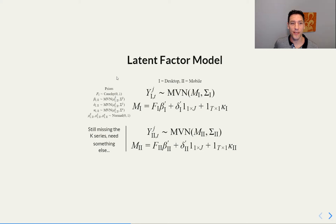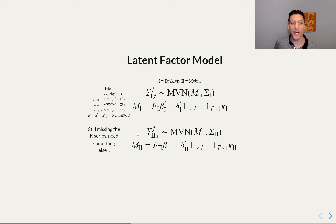We have our set of priors. The big thing to know on this slide is that basically the size of the desktop covariance is full — it's J by J. But for mobile, it's J minus K, and we're missing those K series. So we need to still estimate those K series in order to make the mobile matrix the full size, same size as the desktop matrix Y1.